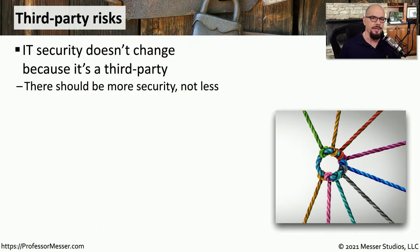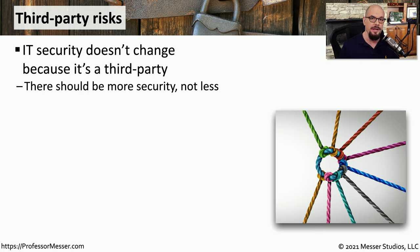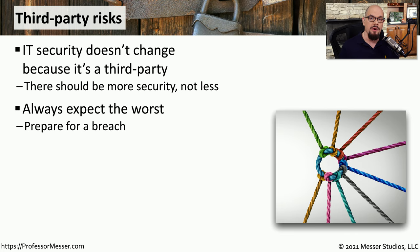No matter the size of your organization, there will be some type of third party that has access to your systems, your applications, or your data. Because these third parties exist does not mean that we can have less security — we need just as much security because these third parties are on our network. It may be that the third parties are people that you can trust, but you should always plan for the worst possible scenario and make sure that your security policies and procedures are expecting those types of problems.